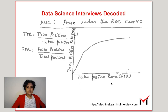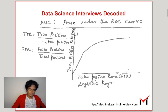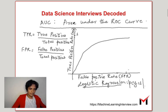For instance, let us take a logistic regression classifier. The outcome of a logistic regression classifier is the probability of y equals 1 given x, the features, and some weights we have learnt.